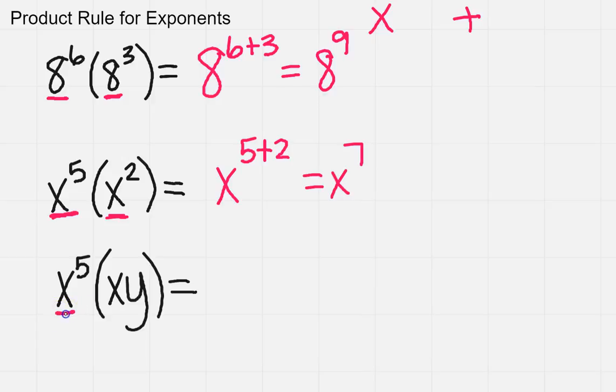Now when I'm looking at the last one, I see an x here and there's an x, but there's also a y. And so you need to make sure that you see that this y is different. So that means we can combine things that are like.